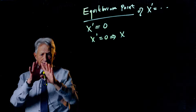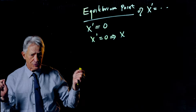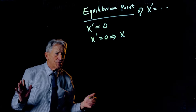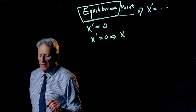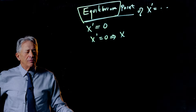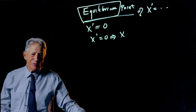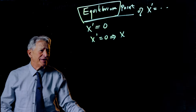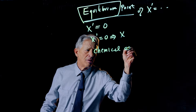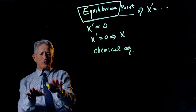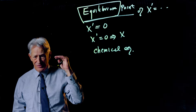This is very important for understanding the lay of the land, especially in 1D equations. It's also worth thinking about the word equilibrium itself. As you take science classes, you're going to hear the word equilibrium a lot — for example, chemical equilibrium, where you put a bunch of substances in a box and they go to chemical equilibrium.